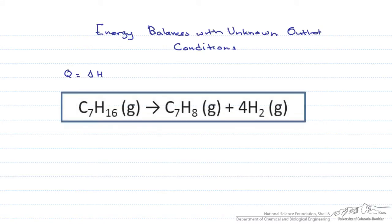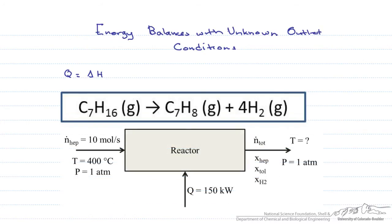We are going to consider the reaction of N-heptane to toluene and hydrogen in a continuous vapor phase reactor. We have 10 moles per second of pure heptane sent to the reactor at 400 degrees C and 1 atmosphere. The fractional conversion of heptane is 0.7. The reaction requires 150 kilowatts of heat to proceed, and we want to know what is our outlet temperature.